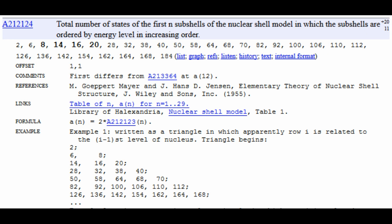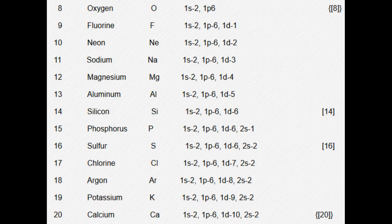They correspond to elements I'm about to show you. The subshells are where the electrons reside. If you have 8 electrons, you have 8 protons, so it's oxygen. The full subshells would be 8 for oxygen, 14 for silicon, 16 for sulfur, and 20 for calcium. I'm not sure exactly what that means, but I thought it was interesting that those coincide exactly.